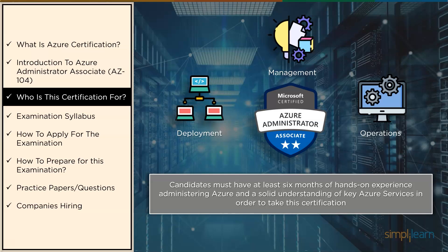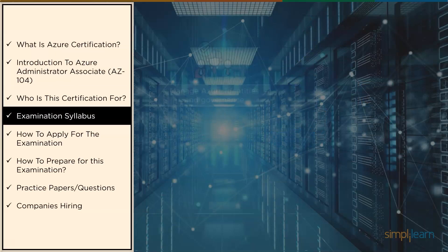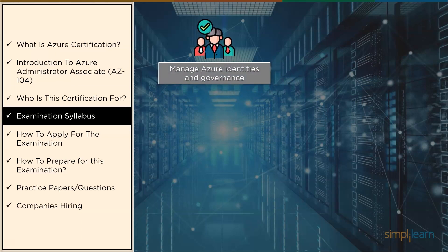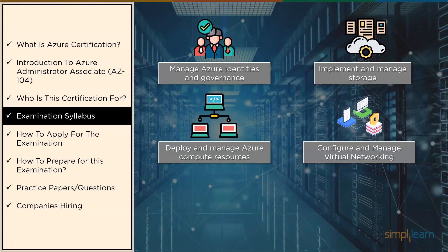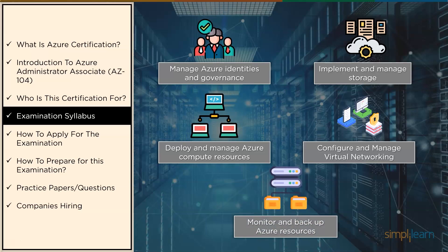Now let's dive deeper and explore what syllabus is required to appear for this examination. First is manage Azure identities and governance, which covers 15 to 20% of the examination. Then comes implement and manage storage, which also covers 15 to 20%. After that we have deploy and manage Azure compute resources, covering 20 to 25%. Then configure and manage virtual networking, covering 25 to 30%. And finally, monitor and backup Azure resources, which covers 10 to 15% of the examination.